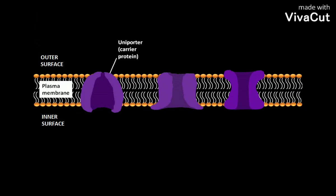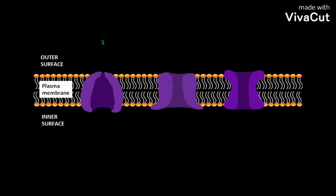A uniporter is a carrier protein which transports a single type of solute molecule, for example glucose and amino acids in mammals, down its concentration gradient via facilitated diffusion. This type of transport is called uniport, and an example of a uniporter is the glucose carrier protein.